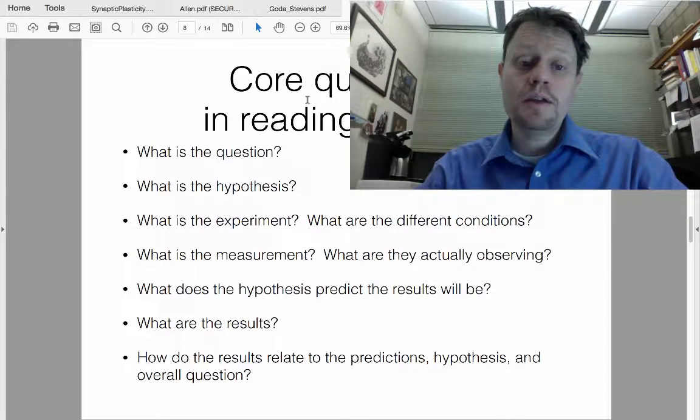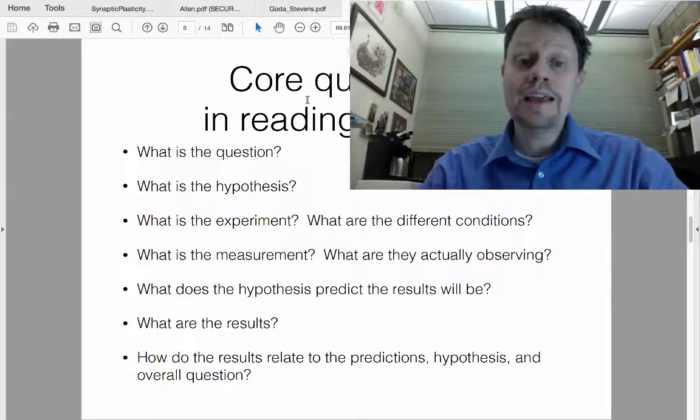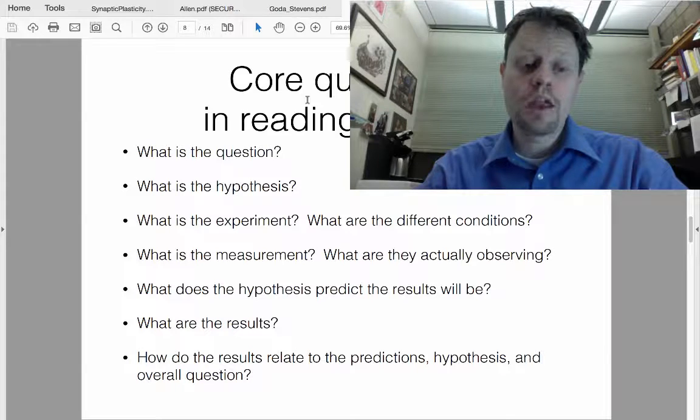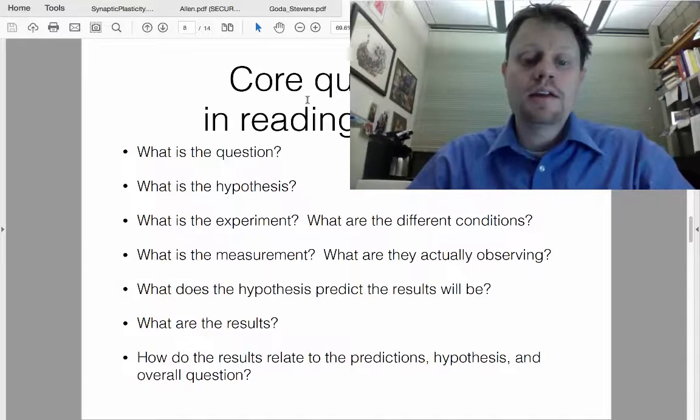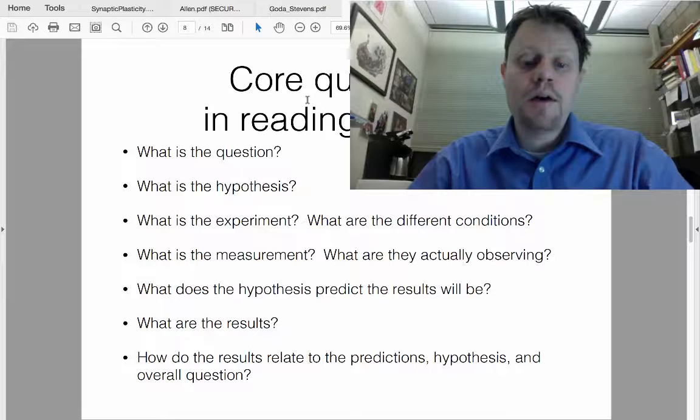Once you know the experiment, the measurements, and the hypothesis, you can start to make specific predictions. That is, if your hypothesis is correct, what will the results be? Once you have that, you do the experiment, measure what the results actually are, and relate these results back to the experiment, predictions, and hypothesis.